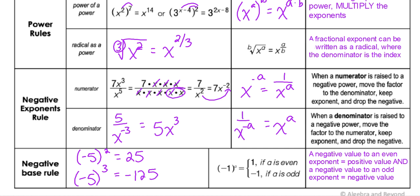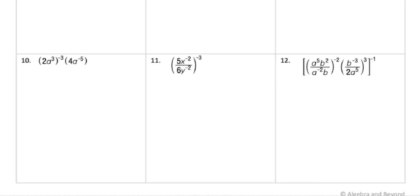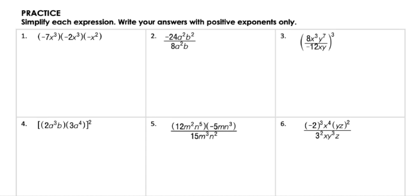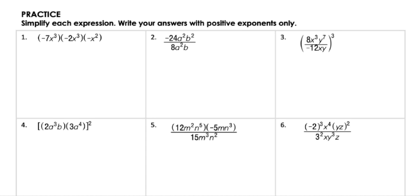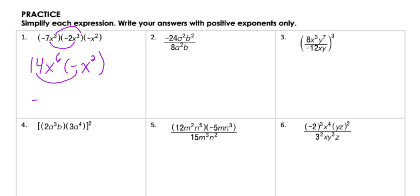Those are all the properties of exponents we're going to use. On the back we have some example problems, and I'm going to go through about six of these. When we simplify, our answer must have no more than one of the same base and all exponents must be positive. For number one, I have the same base, so I multiply −7 and −2 to get 14, and add the exponents to get x^6. Then multiplying by −x^2 gives −14x^8.